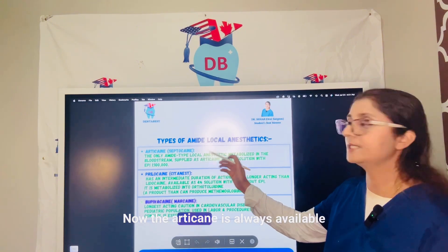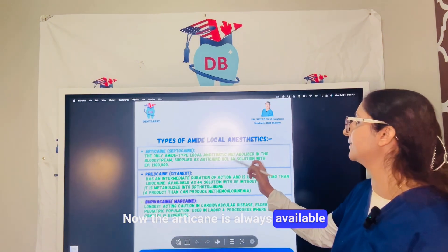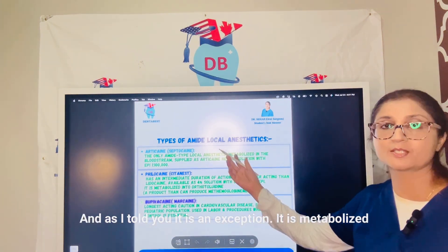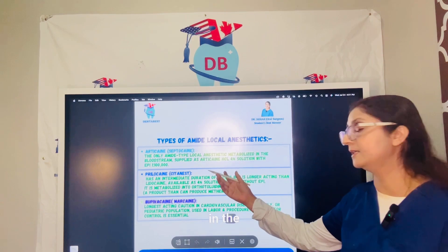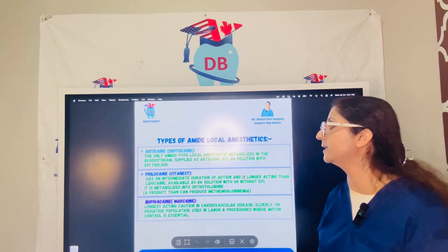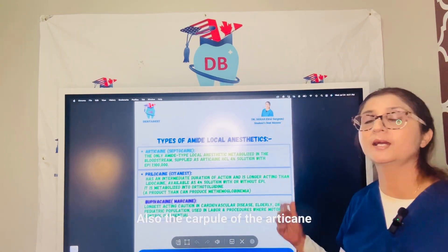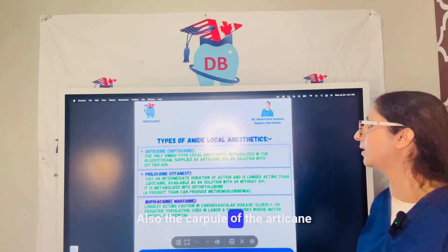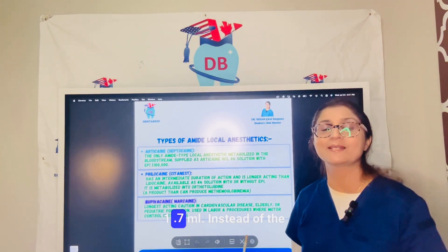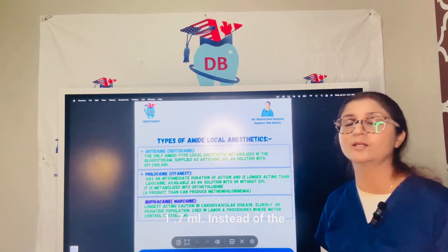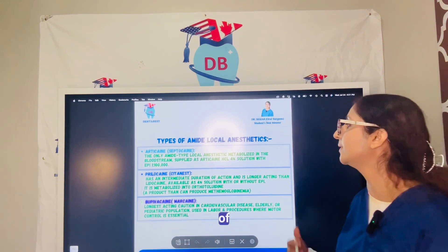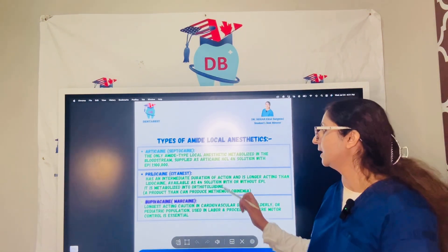Articaine is always available with epinephrine, and as noted, it is an exception — metabolized in the plasma despite being an amide. Also, the cartridge volume for articaine is 1.7 ml instead of the regular 1.8 ml cartridge.